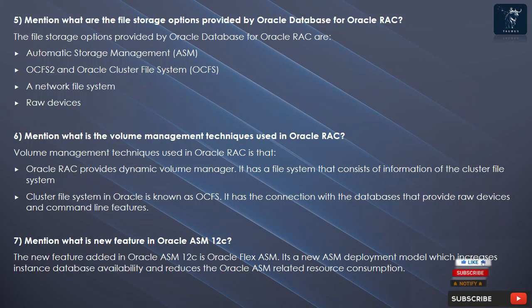Question 5: What are the file storage options provided by Oracle Database for Oracle RAC? The file storage options provided by Oracle Database for Oracle RAC are: Automatic Storage Management (ASM), OCFS2, and Oracle Cluster File System (OCFS).